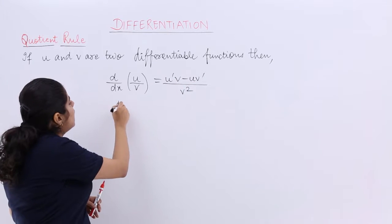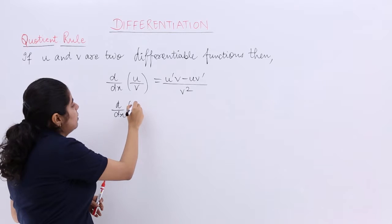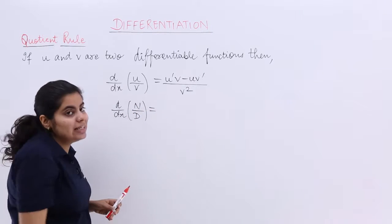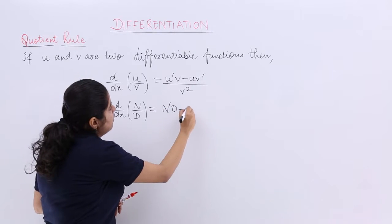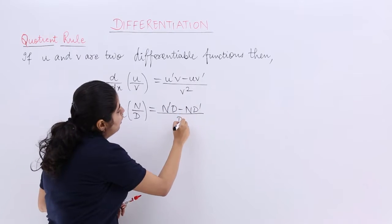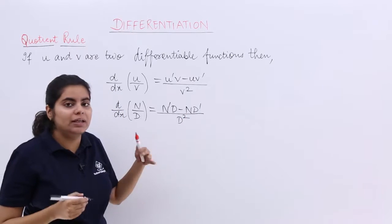Let me tell you in regard to d by dx of n by d, where n is the numerator and d is the denominator, it is nothing but n dash d minus nd dash whole upon d square. That means the denominator square.